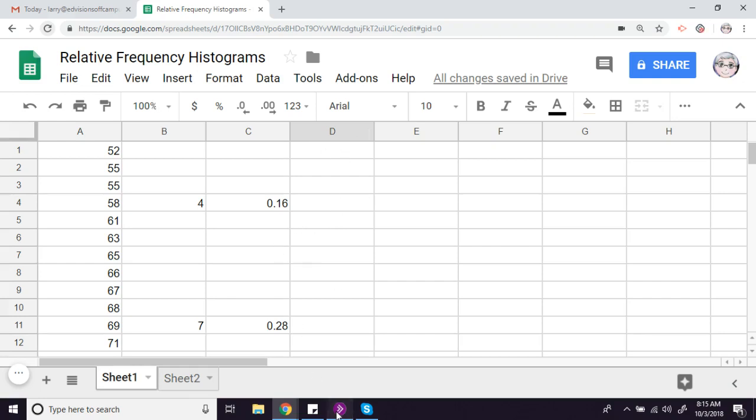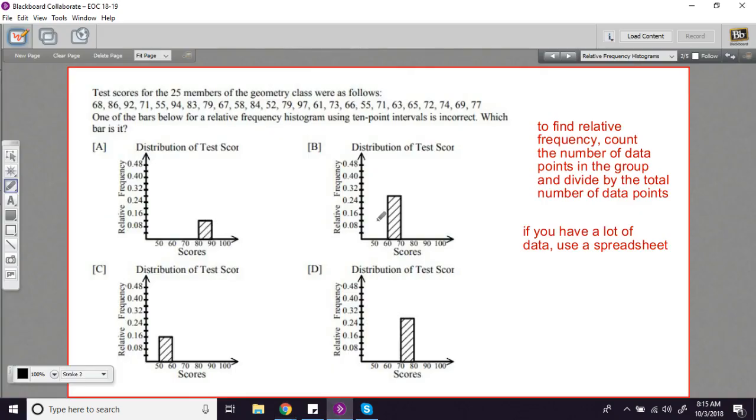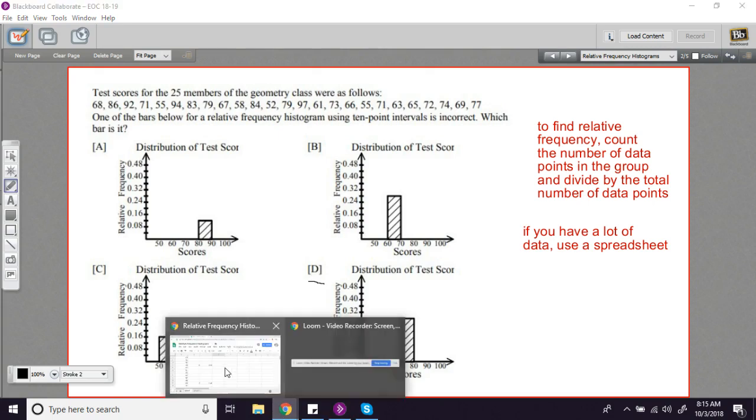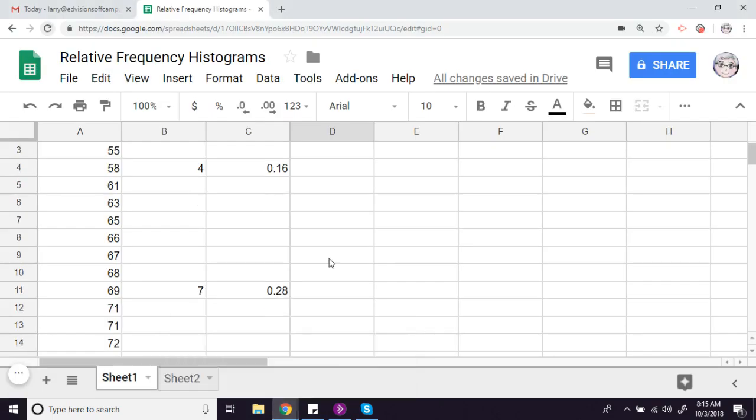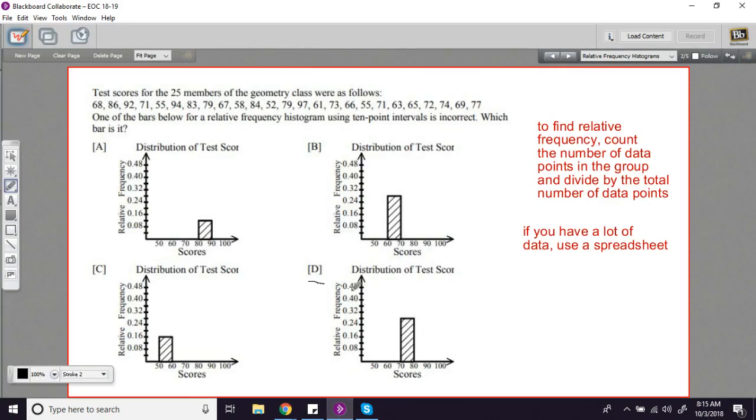But for our problem right now, we want to find the one that's incorrect. And I'm just going to glance at these. You know, the one I'm suspicious about here is the one for the 70s, because I remember that. But let's take a look. The 70s was 0.32. And this is definitely not 0.32. It's below that. So it looks like this is the one that's wrong.